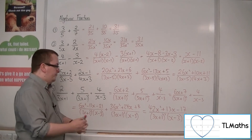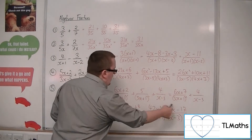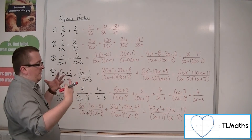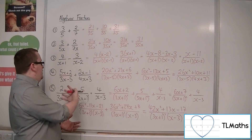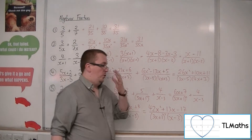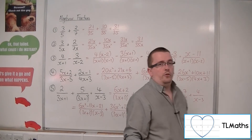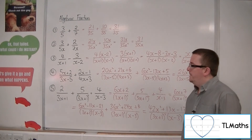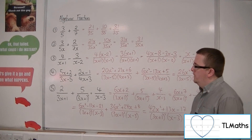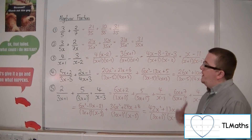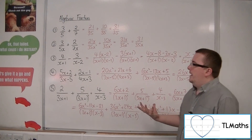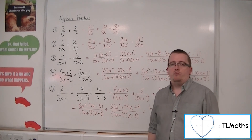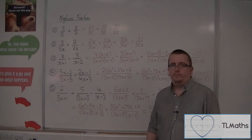And that is the answer for number 5 when you combine all three fractions together. This is how we add and subtract algebraic fractions.